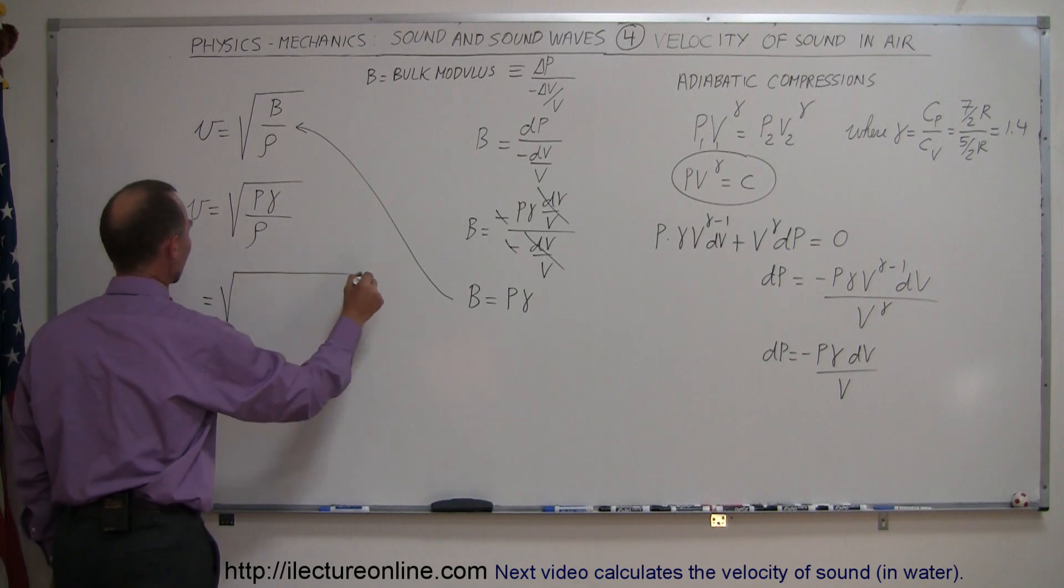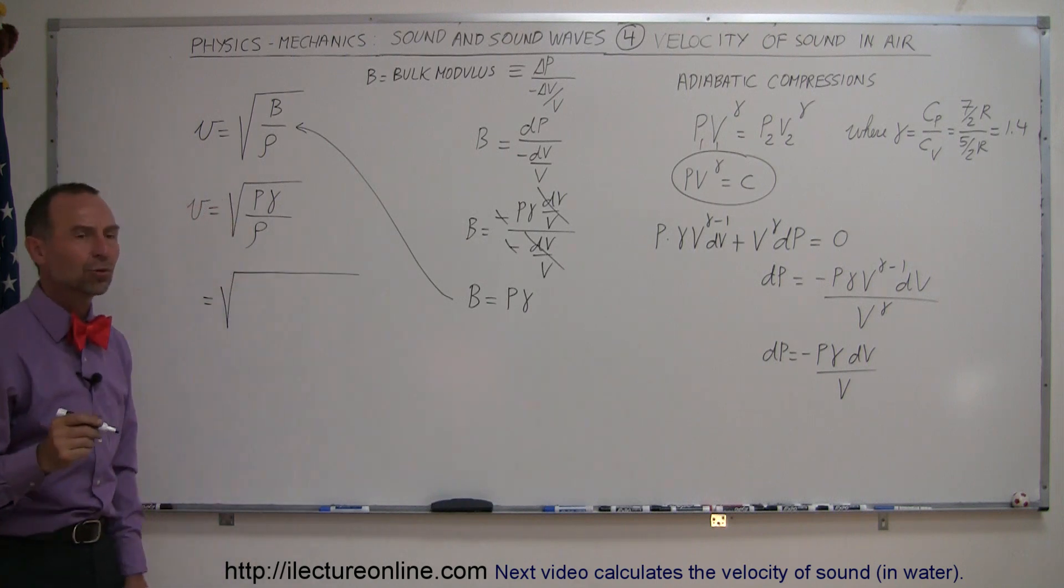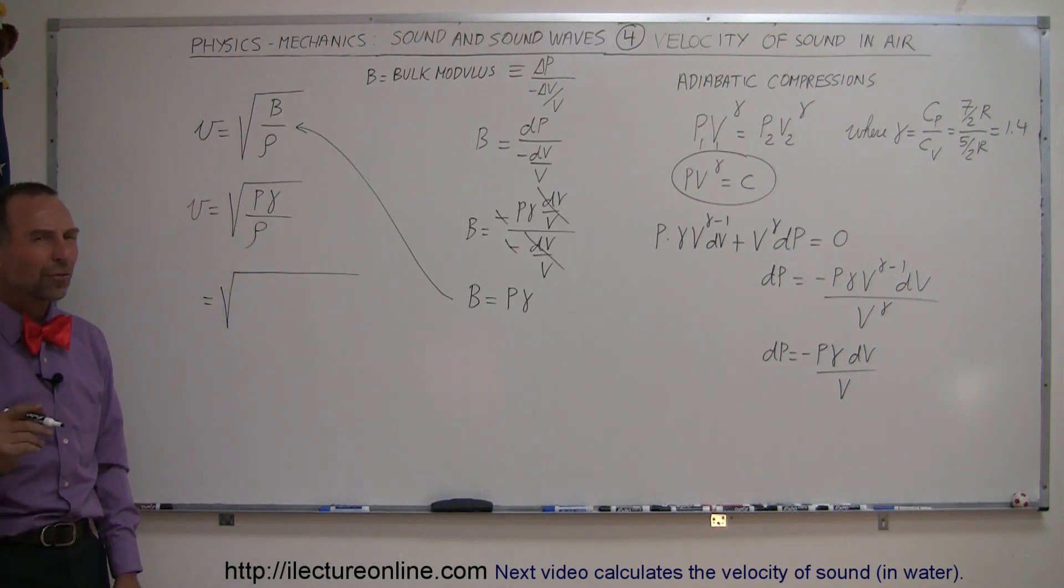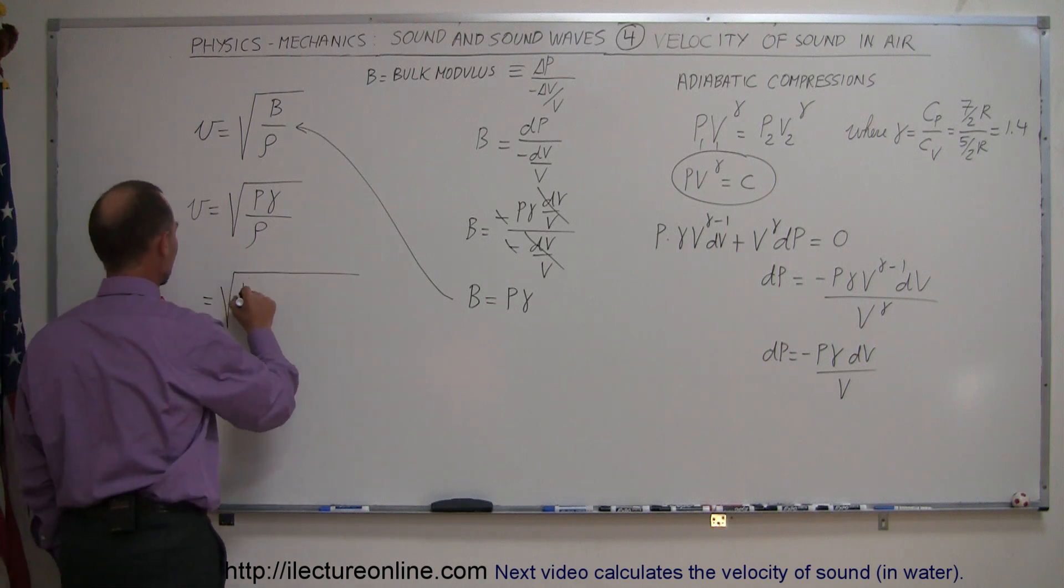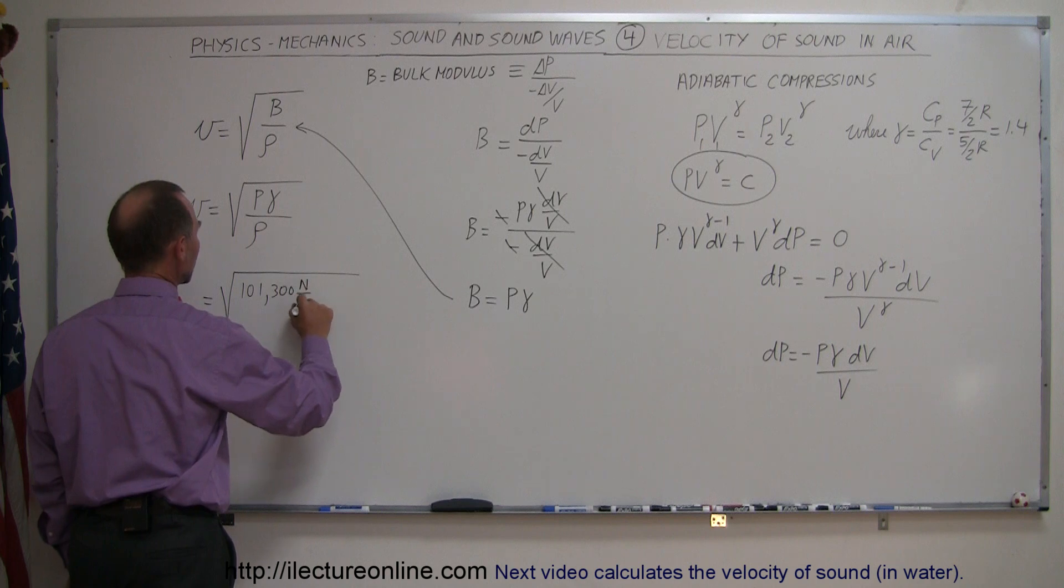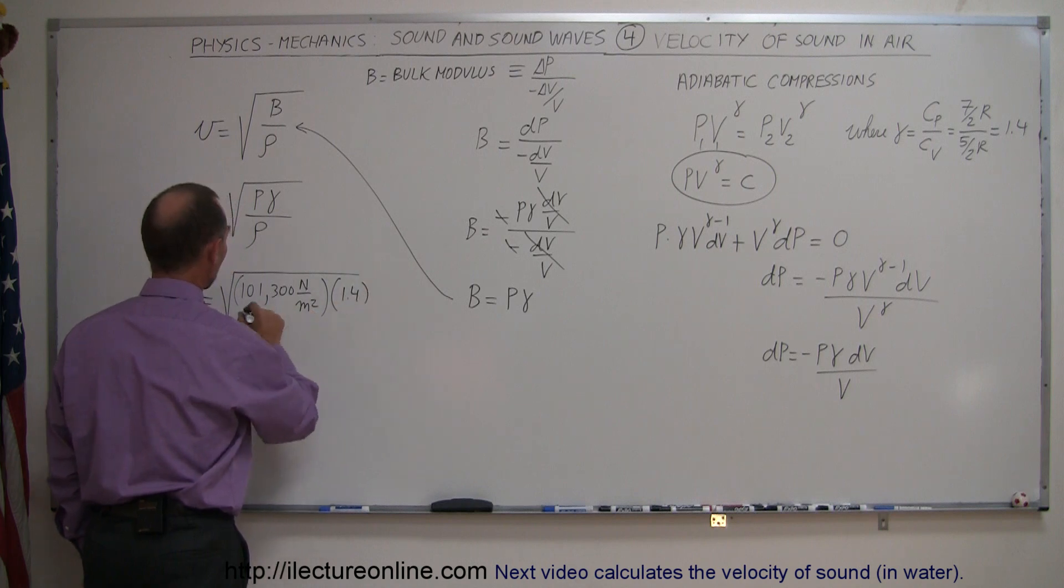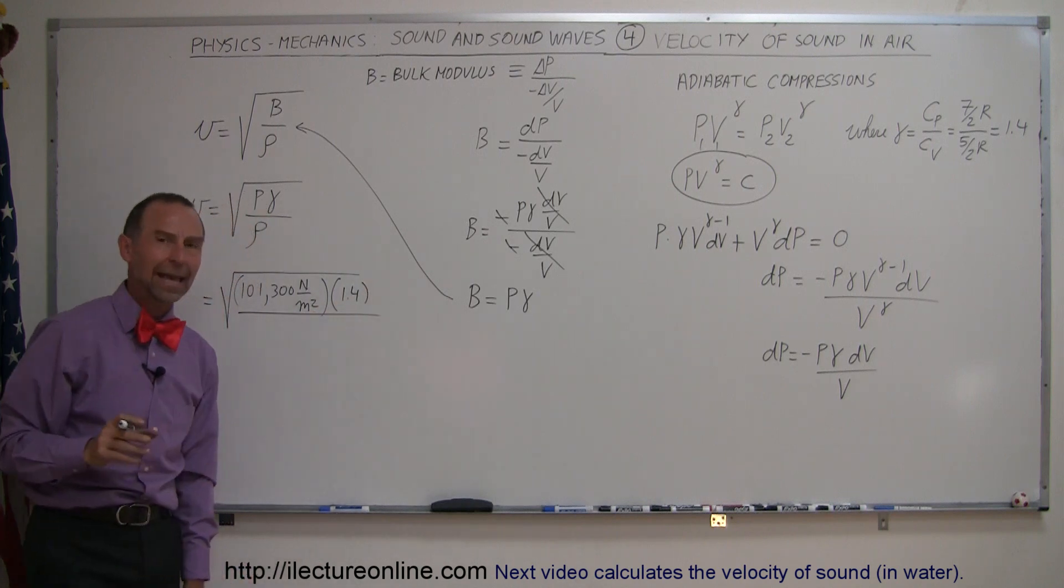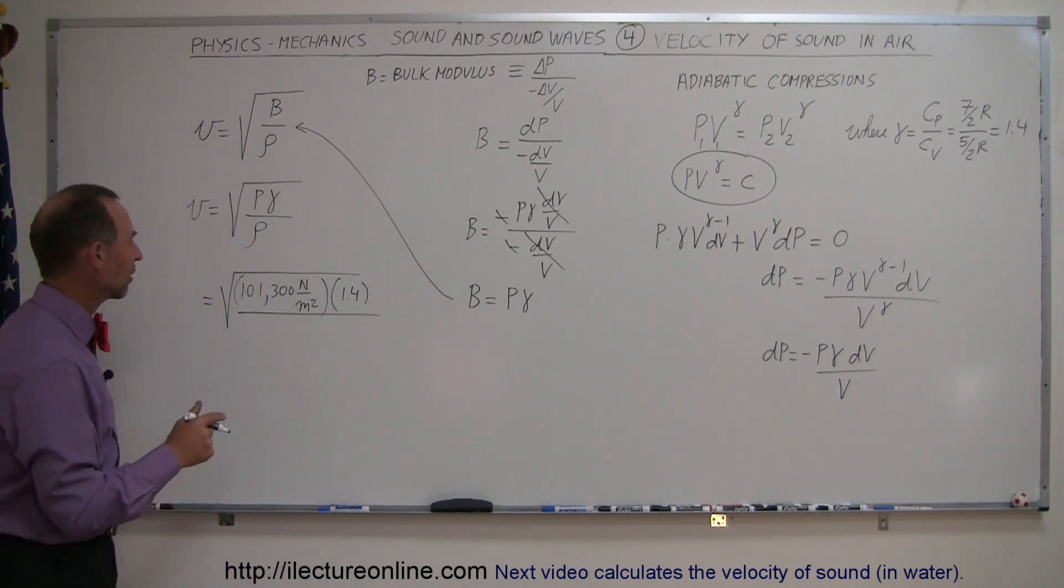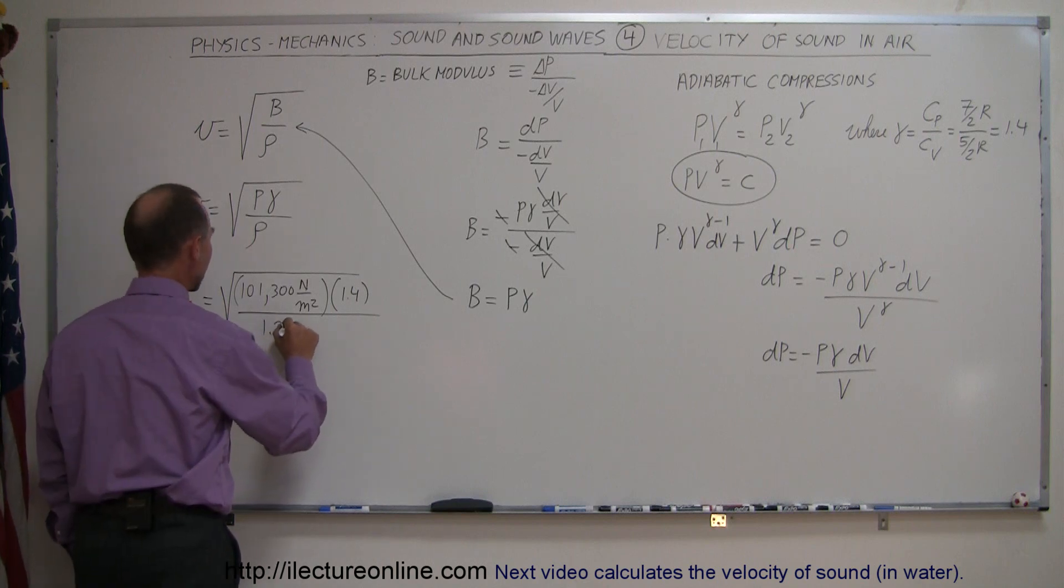This equals the square root of, what is the pressure at standard temperature and pressure? That would be 101,300 pascals, atmospheric pressure, so 101,300 newtons per square meter, times the 1.4 that we found, all divided by the density of air. At standard temperature and pressure, the density of the air is 1.29 kilograms per cubic meter.